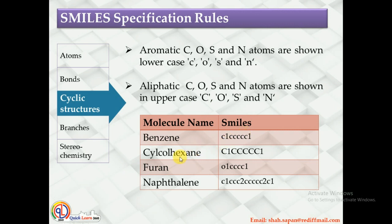Similarly, for furan, the notation starts from O1 and ends at c1, again indicating cyclization. In the case of naphthalene, as you know, there are two benzene rings, so these two benzene rings are represented in the corresponding fused-ring format.